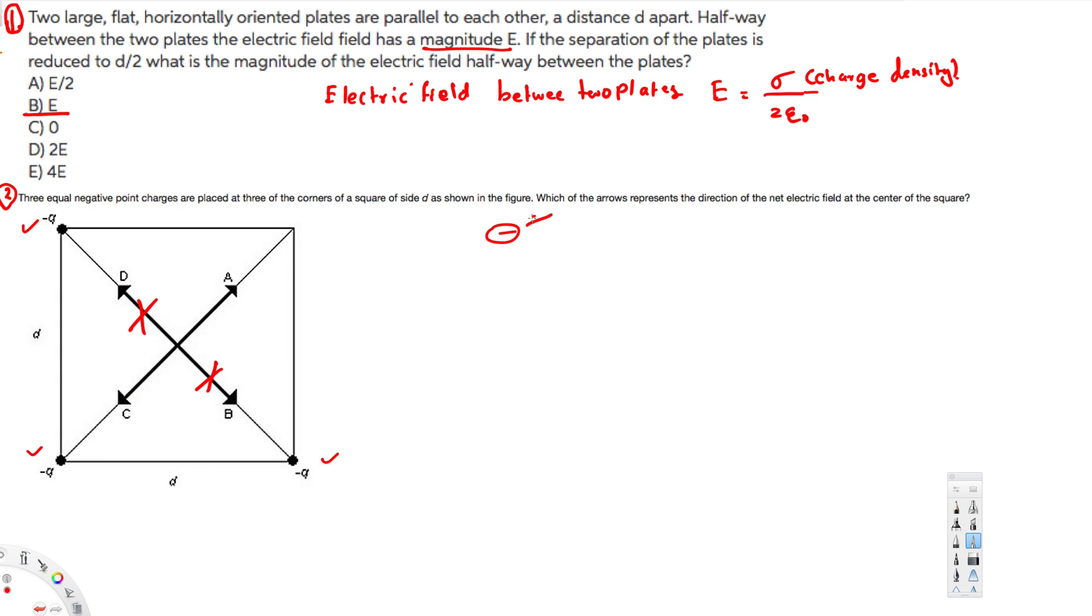negative charge, it's always going toward. So here they've already mentioned it. Therefore, the direction is going to be C. The answer—the question is asking which of the arrows represents the direction of the net electric field—